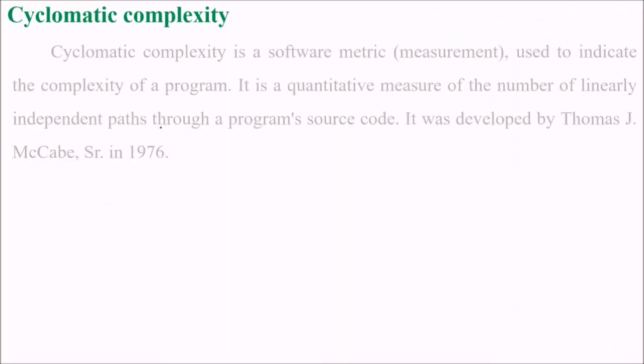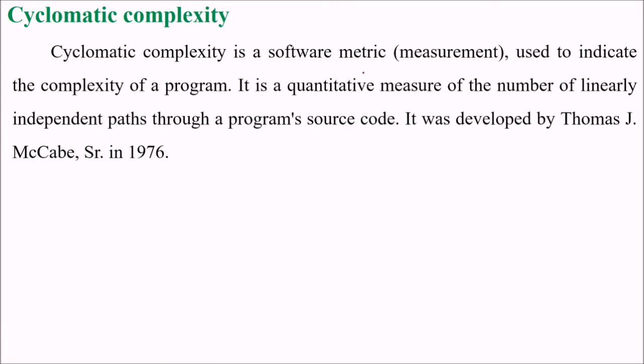What is cyclomatic complexity? It is a software metric or measurement, basically a metric which is used to indicate the complexity of a program. It is actually a quantitative measure of the number of linearly independent paths through a program source code. Cyclomatic complexity is the quantitative measure of the number of linearly independent paths in the source code. It was developed by McCabe in 1976.